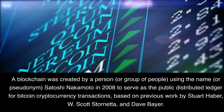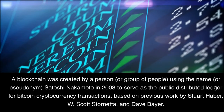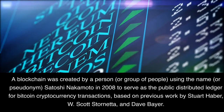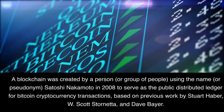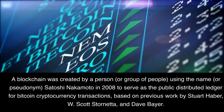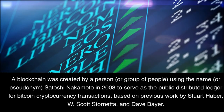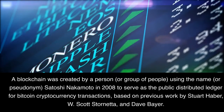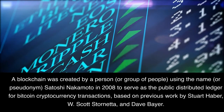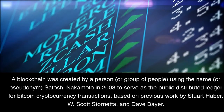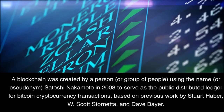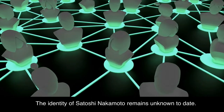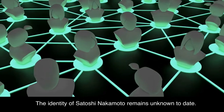A blockchain was created by a person, or group of people, using the name or pseudonym Satoshi Nakamoto in 2008 to serve as the public distributed ledger for Bitcoin cryptocurrency transactions, based on previous work by Stuart Haber, W. Scott Stornetta, and Dave Bayer. The identity of Satoshi Nakamoto remains unknown to date.